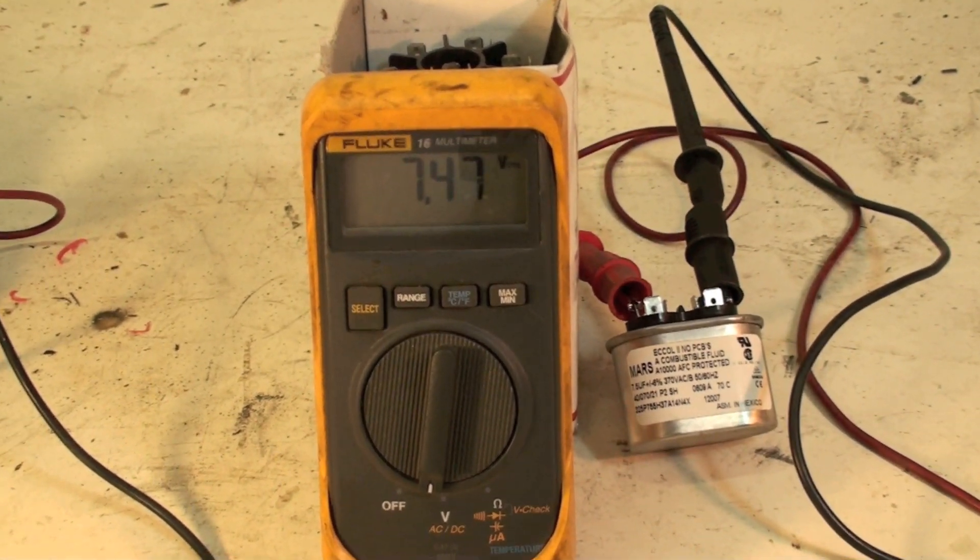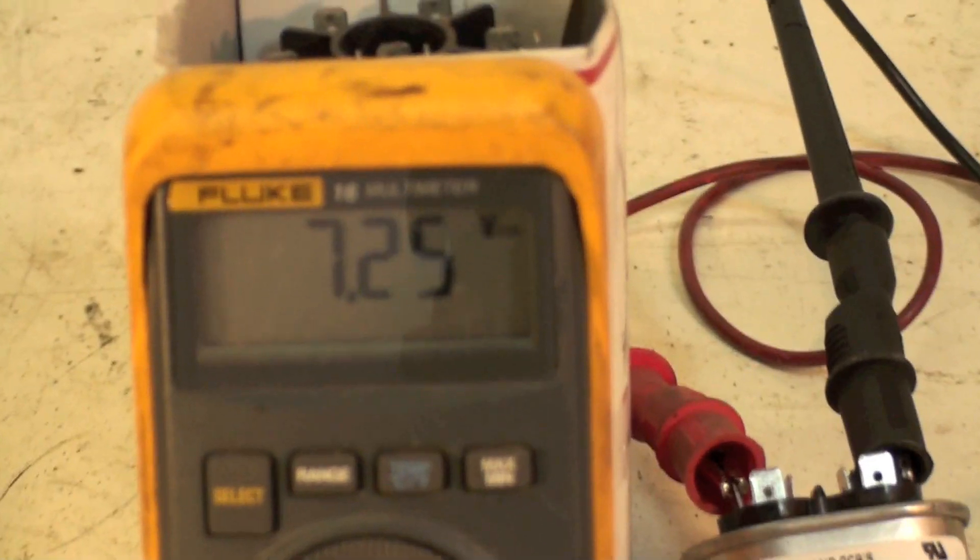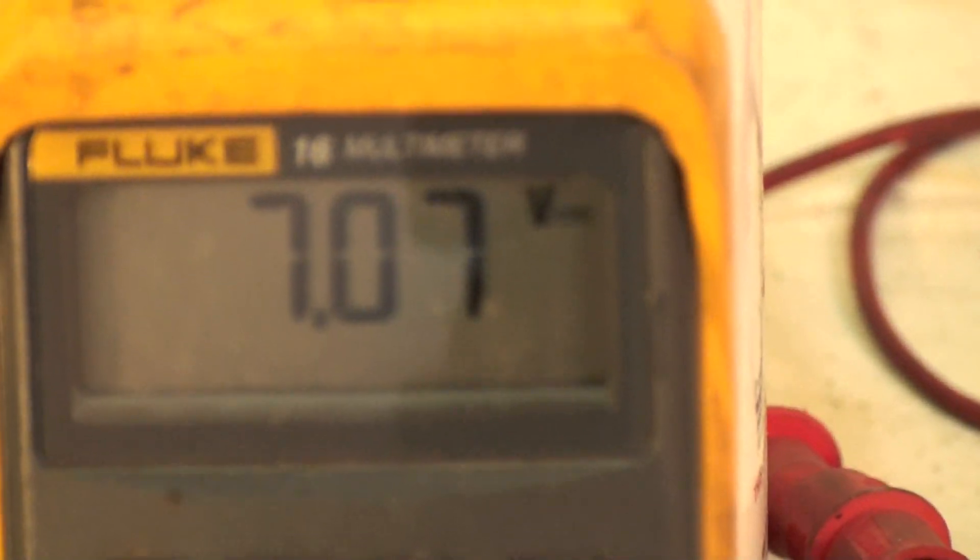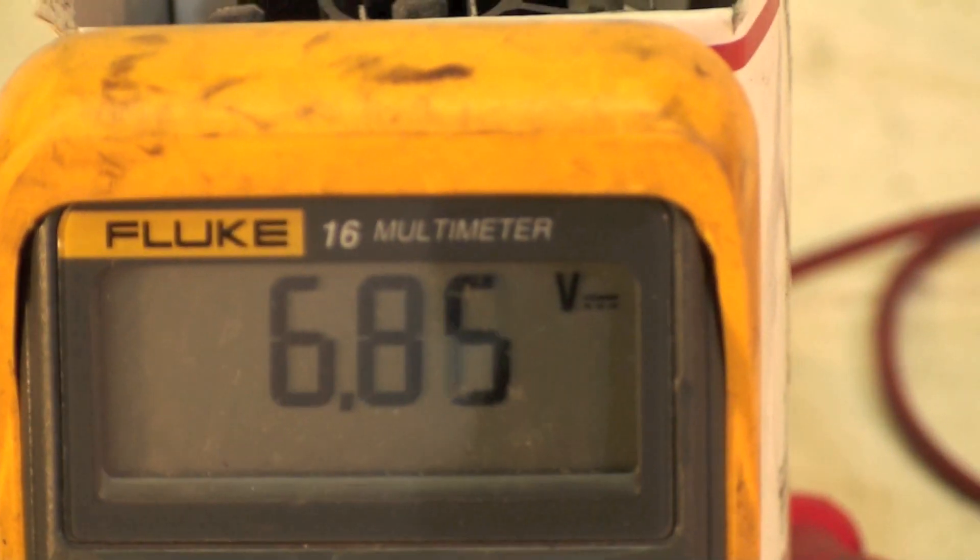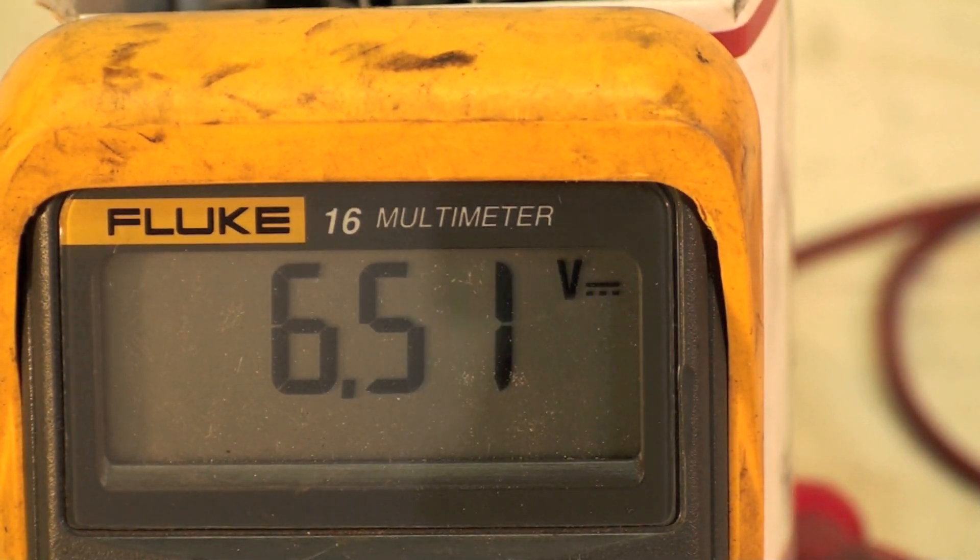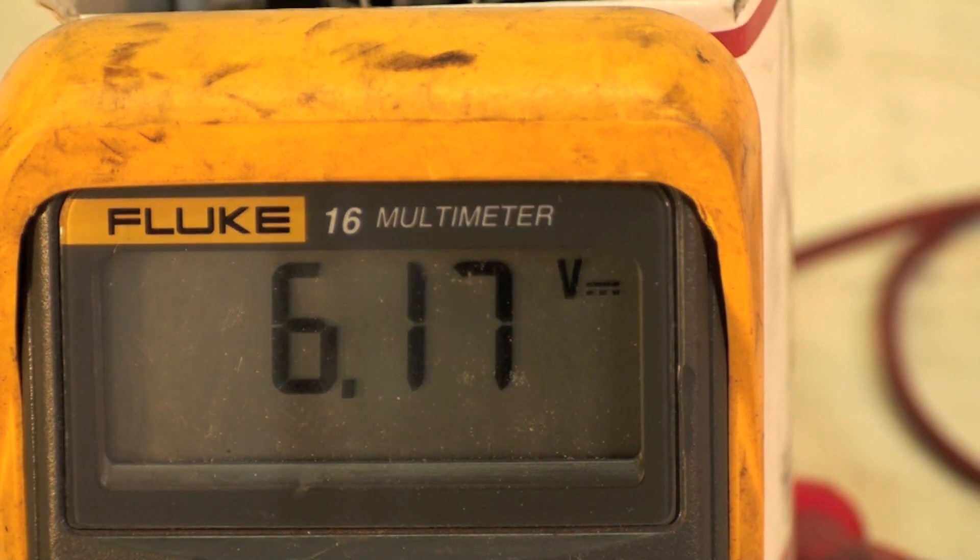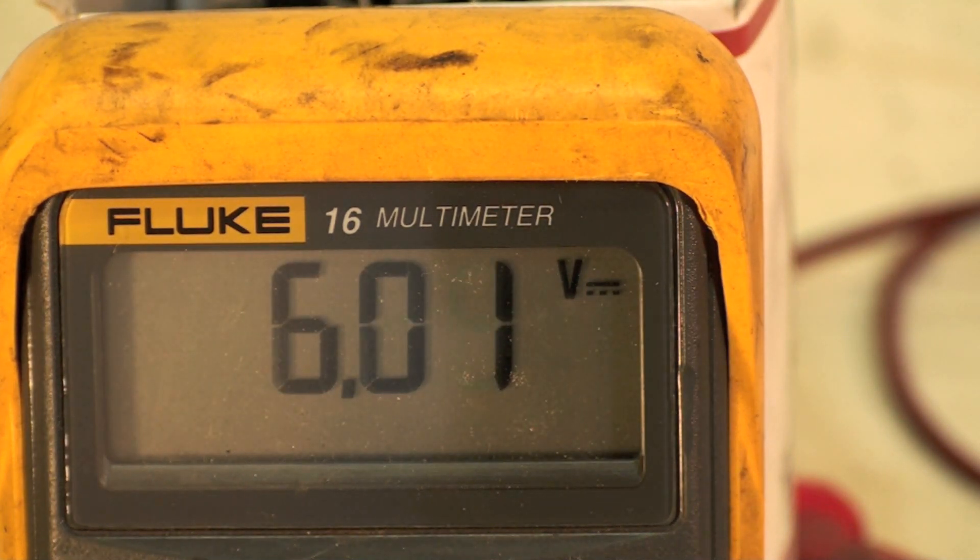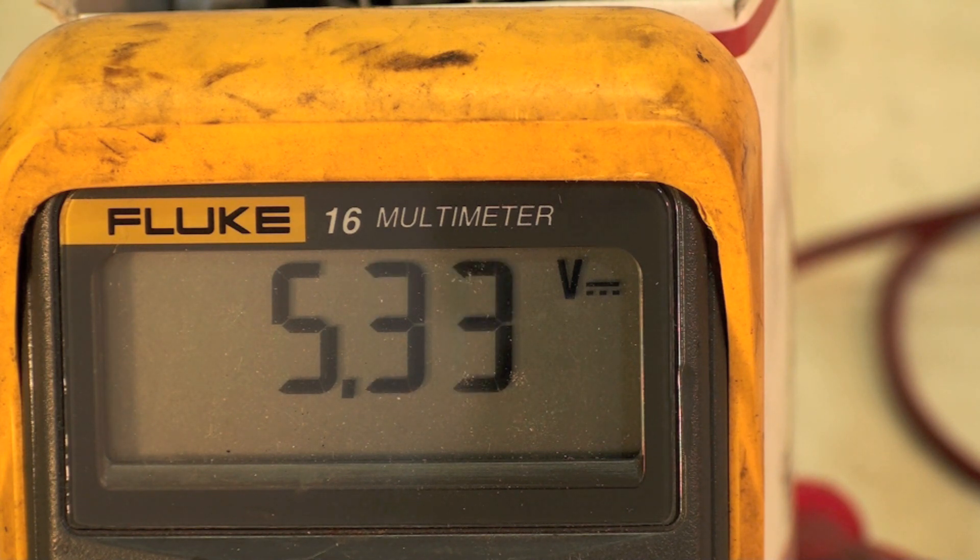Now you can see what we've got is a voltage and it's descending. That's because the meter, even though it's a high impedance meter, which means it's got a lot of resistance in it, is bleeding off the capacitor. So it'll eventually bleed it down.